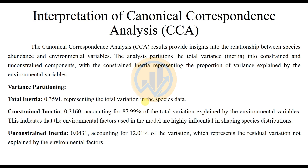Variations Partitioning: Total Inertia is 0.3591, representing the total variation in the species data. Constrained Inertia is 0.3160, accounting for 87.99% of total variation explained by the environmental variables. That indicates that the environmental factors used in the model are highly influential in shaping species distributions. Unconstrained Inertia is 0.0431, accounting for 12.01% of variation, which represents the residual variation not explained by the environmental factors.